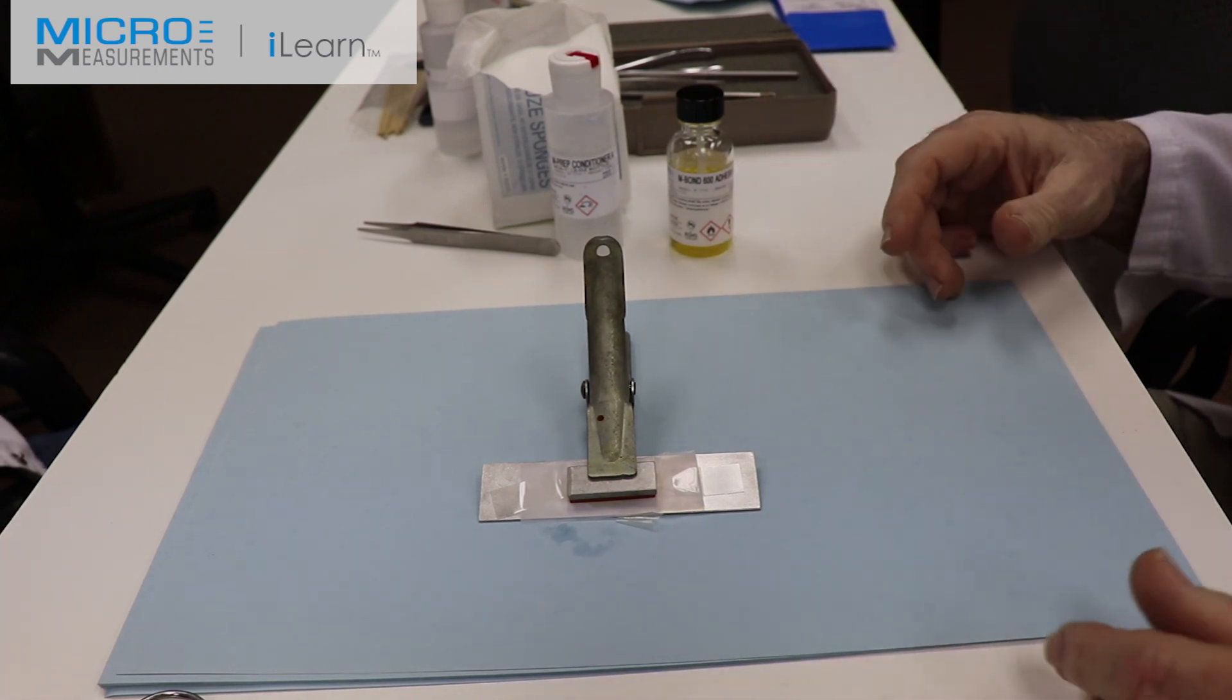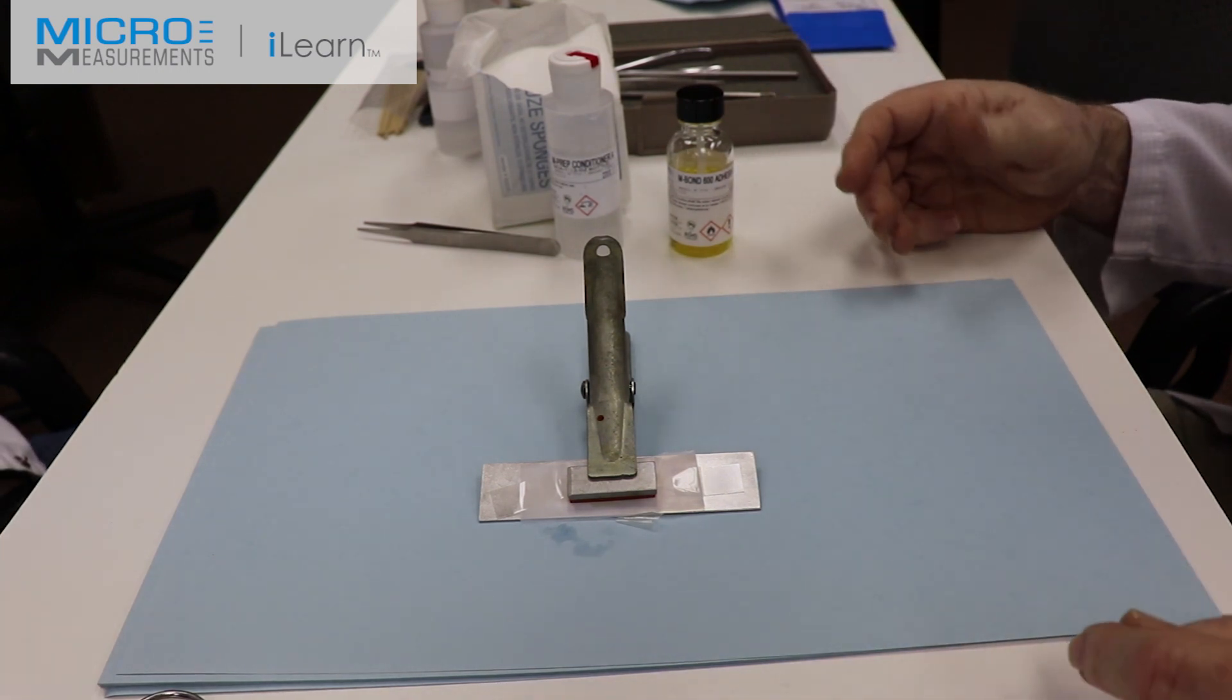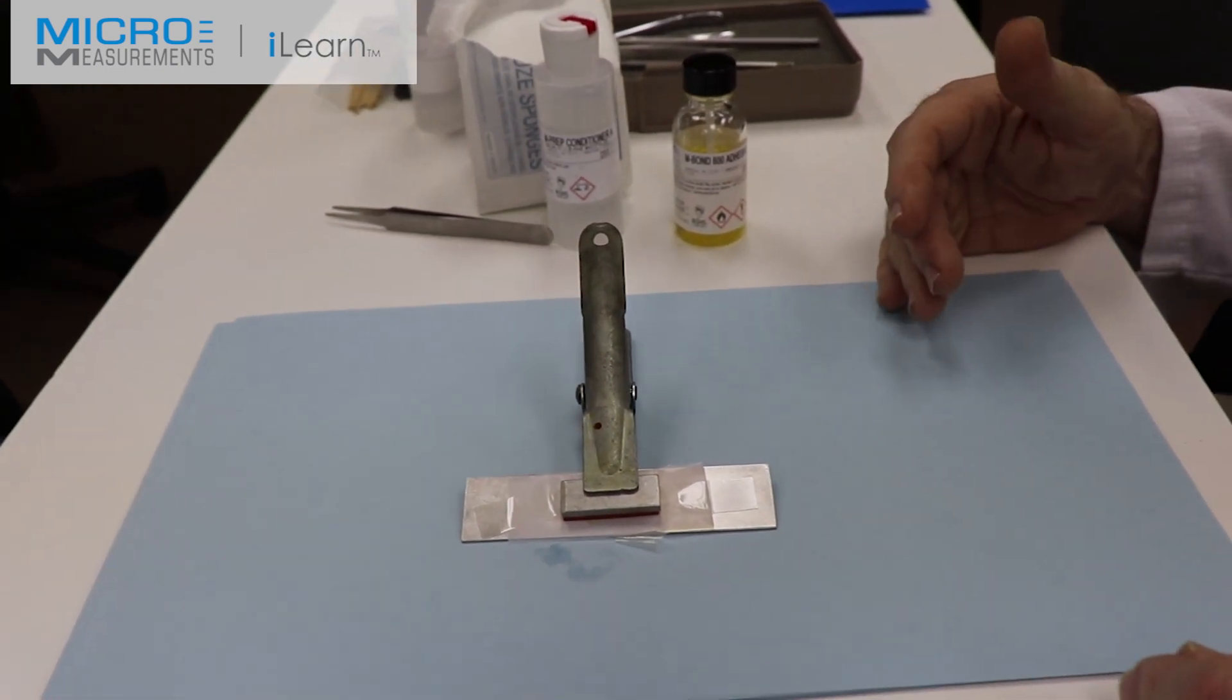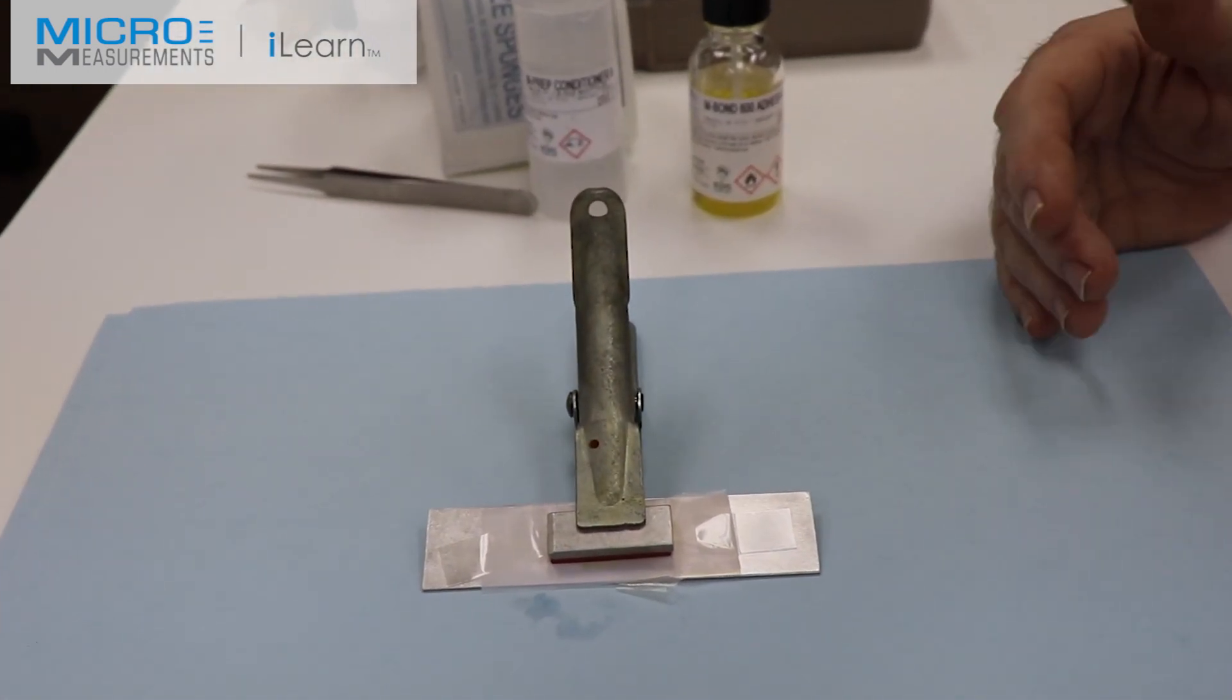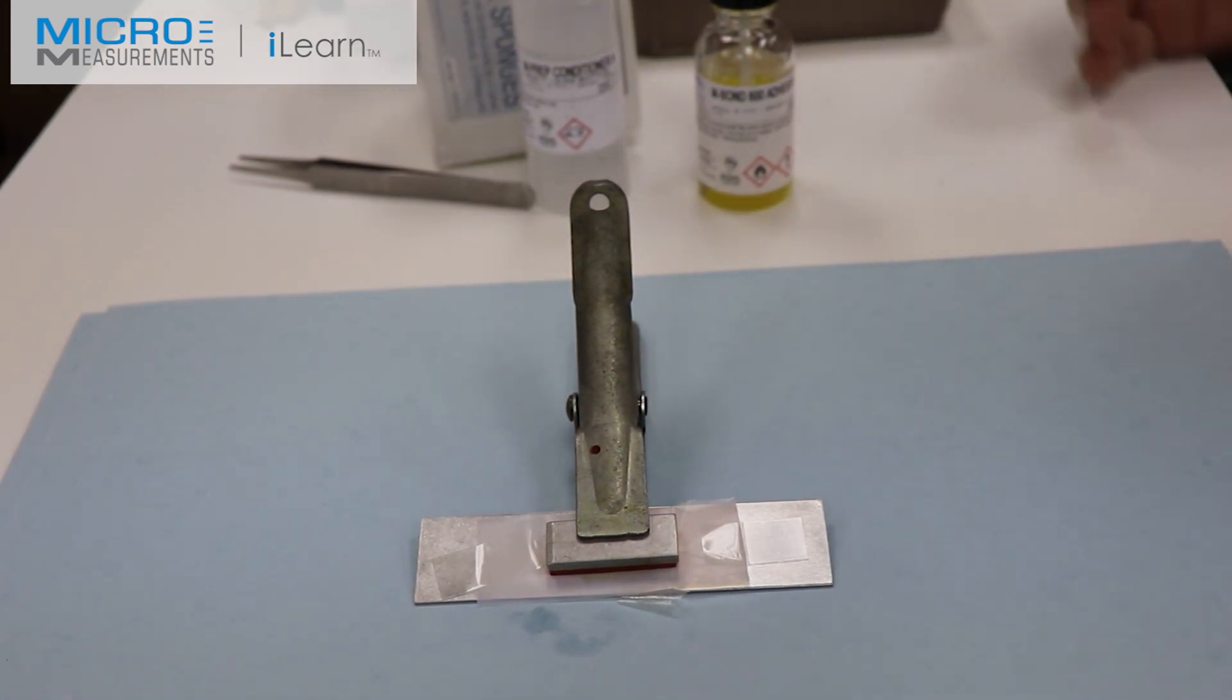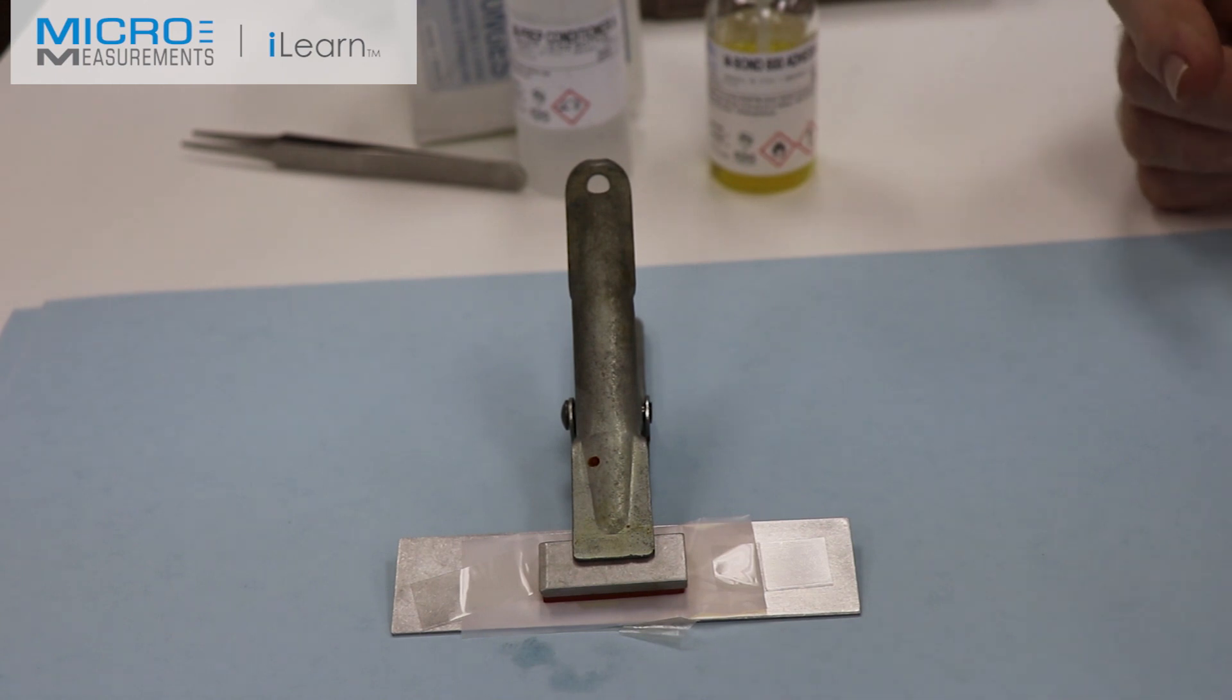We're now going to put this clamped up installation into the oven. A minimum cure temperature of 175 degrees Fahrenheit for four hours is the minimum. You cannot go below that. You can go above it and cure it faster, but the minimum is 175 degrees Fahrenheit for four hours. And that is bond line temperature. If you have a large spring element or a heavy part, it might take it a long time to get to that 175 degrees Fahrenheit.